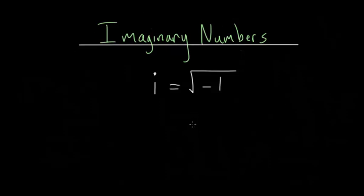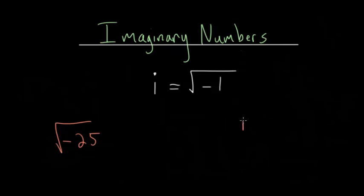For this video on imaginary numbers, I'd like to cover a couple more concepts that often come up. One of them is how do we deal with the square root of something like minus 25. We'll also deal with what happens if I square i, or raise i to something like the fifth power or the 17th power. So we're talking about powers of imaginary numbers and simplifying square roots of negative numbers.